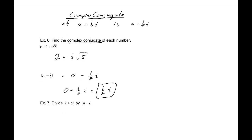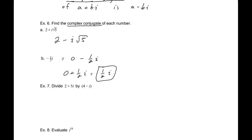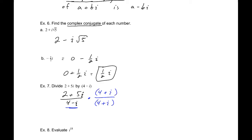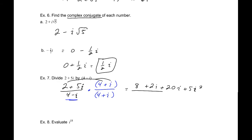The conjugate is useful for division. To divide (2 + 5i) by (4 - i), multiply numerator and denominator by the conjugate of the denominator, which is (4 + i). The numerator becomes: 8 plus 2i plus 20i plus 5i squared — and since i squared equals negative one, the 5i squared becomes minus 5.